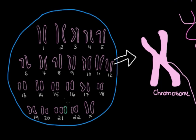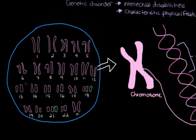You can have other syndromes if you have three copies of other chromosomes. For example, if you have an extra copy of chromosome 13 you'd have Patau's syndrome, or if you had an extra copy of chromosome 18 you'd have Edwards syndrome. There isn't a syndrome for each chromosome — often extra copies of different chromosomes are fatal in utero — but these are some exceptions: chromosomes 13, 18, and 21.